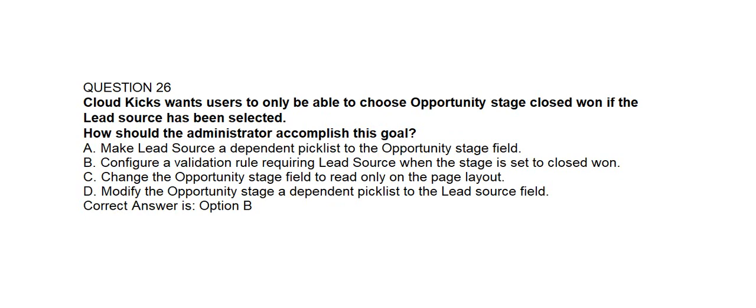Option A: make lead source a dependent picklist to the opportunity stage field. Option B: configure a validation rule requiring lead source when the stage is set to closed won. Option C: change the opportunity stage field to read only on the page layout.